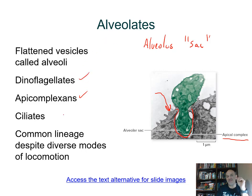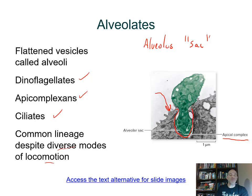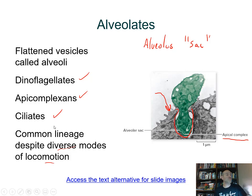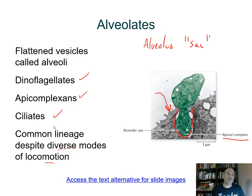The alveolates include dinoflagellates, apicomplexans, and ciliates — they do have a common lineage and are thought to be a monophyletic group, but with diverse modes of locomotion. Characterizing them by how they move was not a good way to classify them. Modern analysis — looking at DNA and other molecular structures — shows this group has common ancestry.